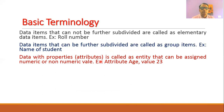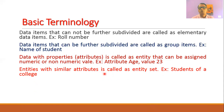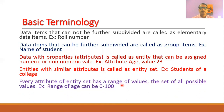A data item may have certain properties; when it does, it is called an entity. This property can be assigned a value — either numeric or non-numeric. For example, the attribute 'age' can be assigned a value such as 23. Entities with similar attributes form an entity set — for example, employees of an organization or students of a college. Every attribute of an entity set has a range of values; for age, the range could be 0 to 100.